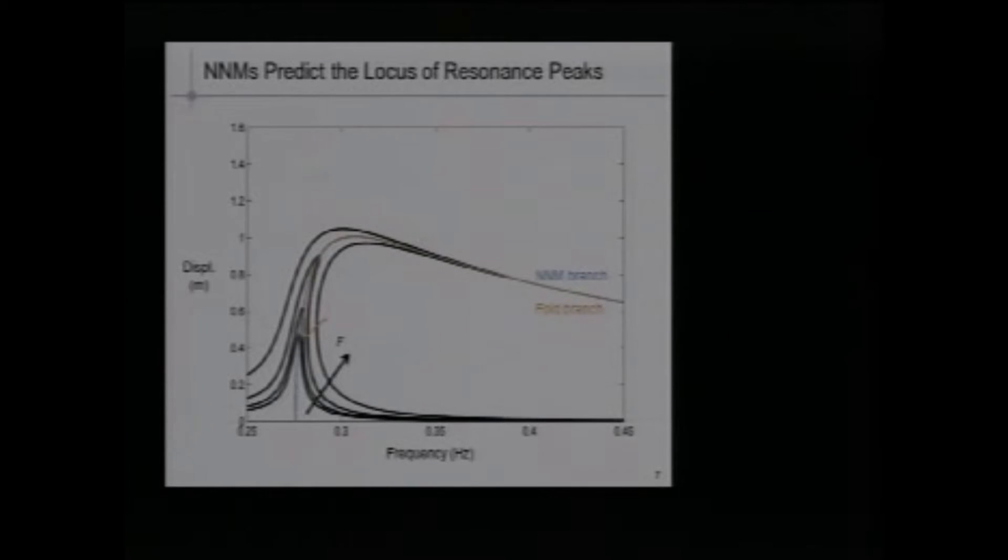Just to remind you that nonlinear normal modes can predict actually the locus of resonance peaks. Here we compare a damped forced response. The black solid line is the damped forced response of a system for several forcing amplitudes, and nonlinear normal modes form the backbone of these damped forced responses, also nonlinear normal modes are undamped and unforced in this case.